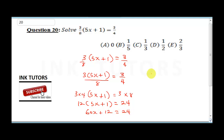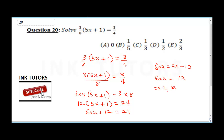Collecting like terms: 60x equals 24 minus 12, which is 12. Therefore x equals 12 over 60. Simplifying, 12 into 60 gives 1 over 5. So our final answer is x equals 1/5.